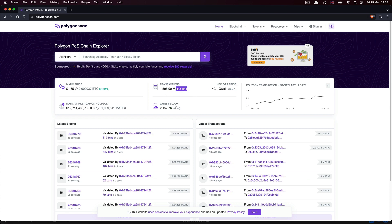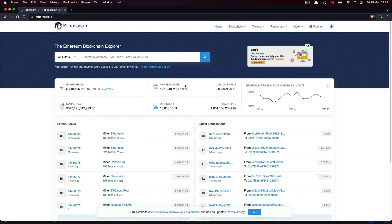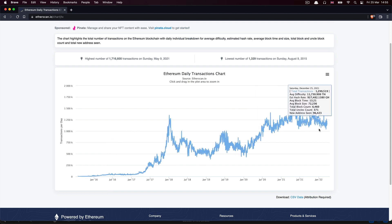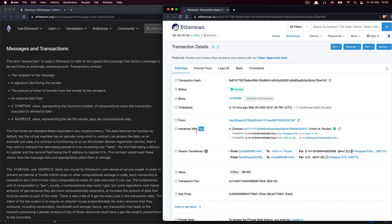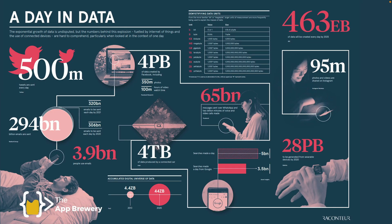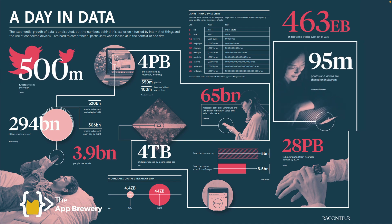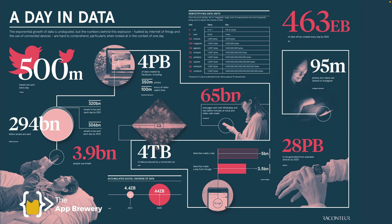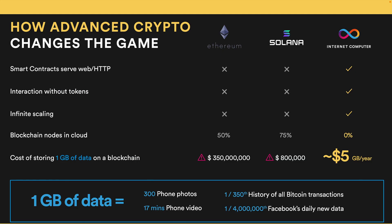Why are we still relying on legacy infrastructure despite all this technology? The reason is that it's extremely difficult with current blockchains like Ethereum to host large amounts of data or carry out a large number of transactions, because Ethereum was built primarily to act as a ledger — it's not designed to handle a lot of computation or data storage. For example, storing just one gigabyte of data on Ethereum costs something like $350 million at current prices.